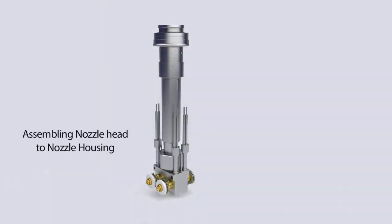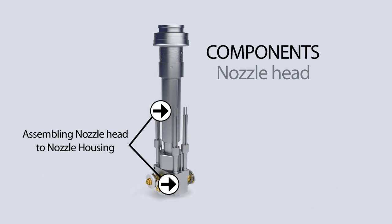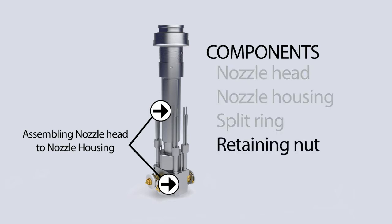Next, we'll be discussing assembly of the nozzle head to the nozzle housing. Nozzle head installation consists of the following components: the nozzle head, the nozzle housing, the split ring, and the retaining nut.